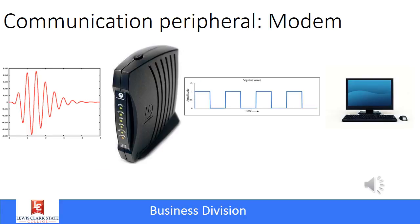Remember, we define the internet as essentially one big large computer network, and if you're going to connect your computer or your network to the internet, you'll probably be using some sort of a modem. A modem stands for modulator demodulator. What a modem does is it converts signals from analog — the waves you see on the left side of this picture — to digital. Digital information is what a computer can understand. When you transmit something from your computer, the modem converts it to analog, and when you're receiving information, the modem converts it from analog into digital.